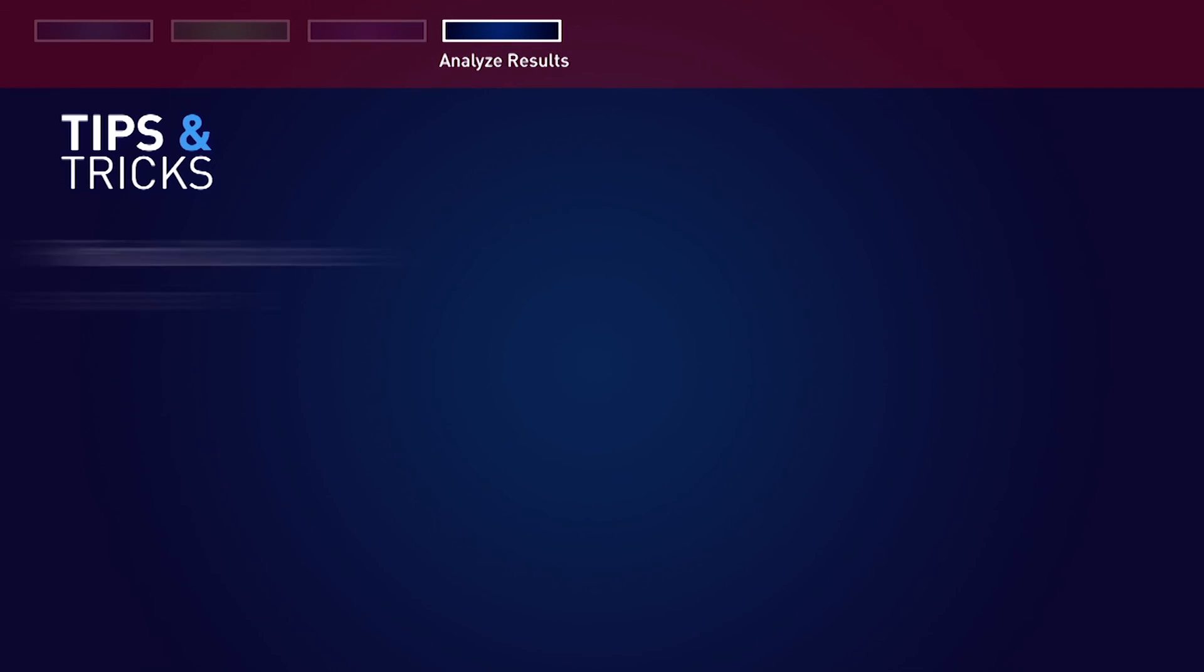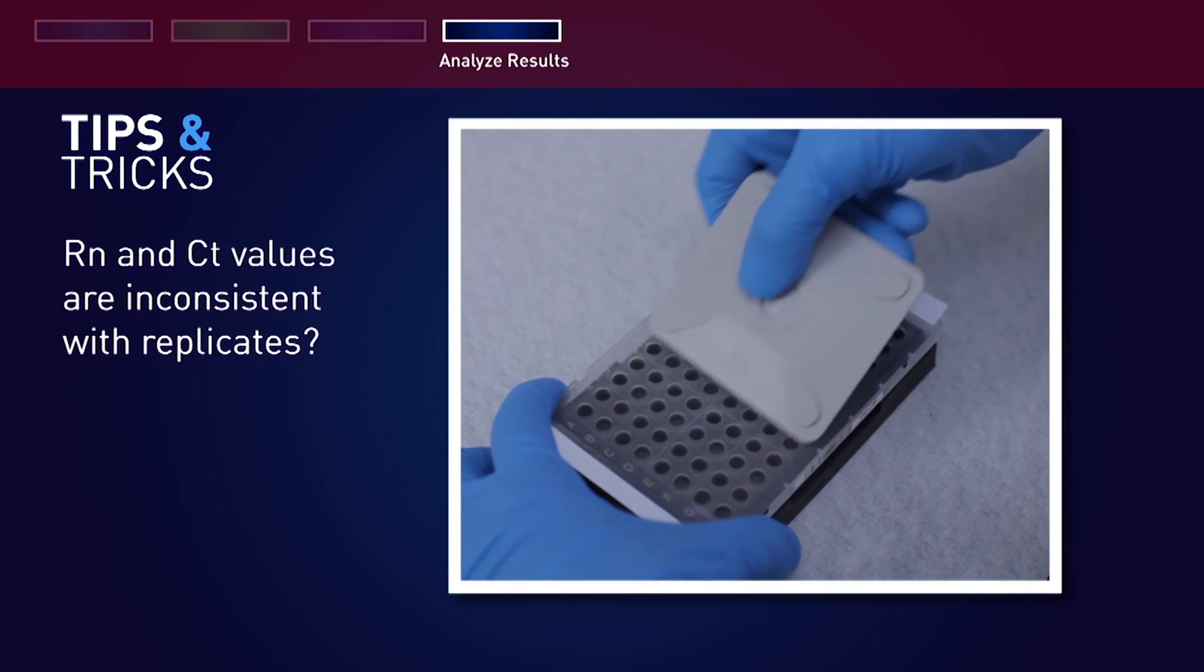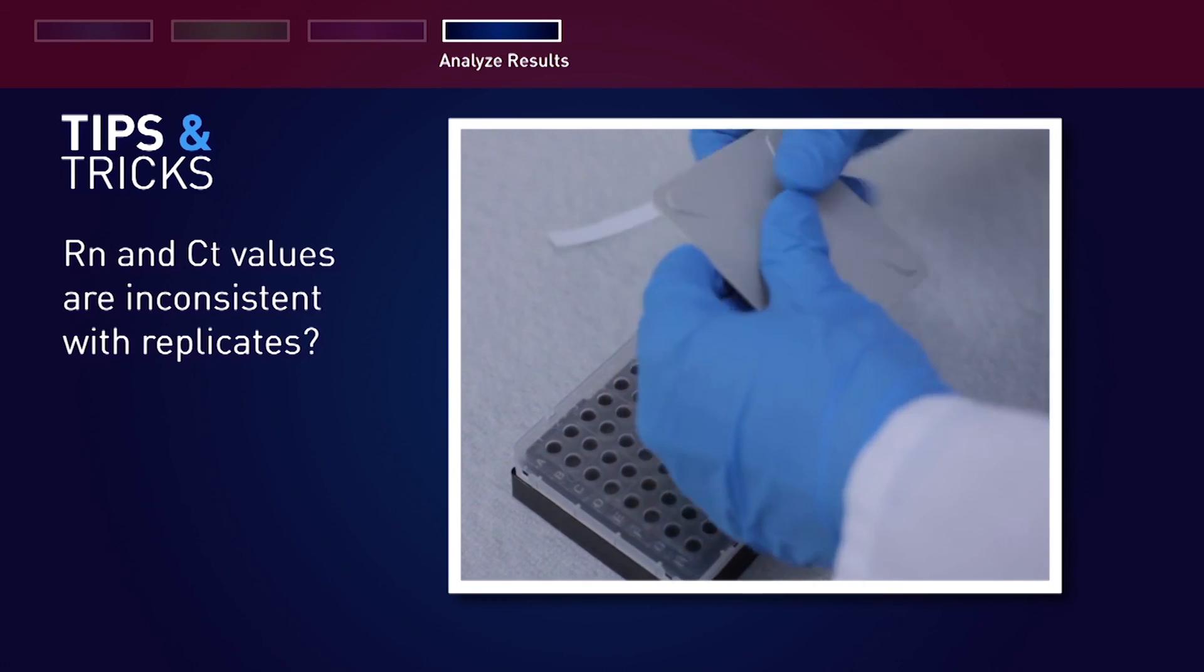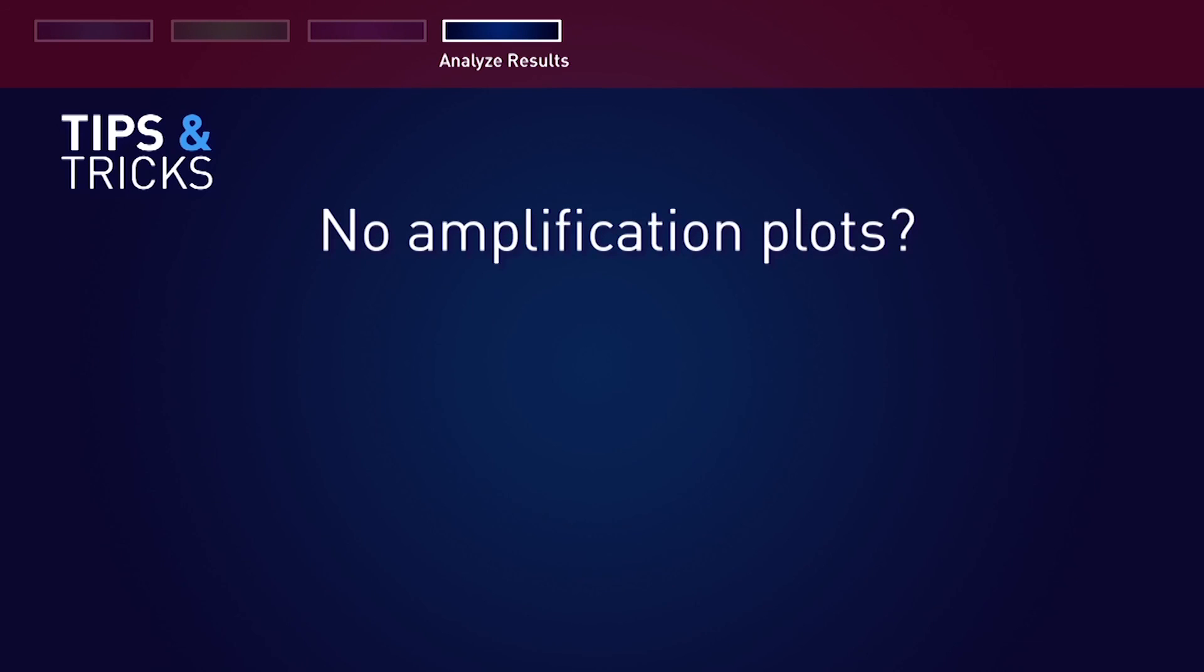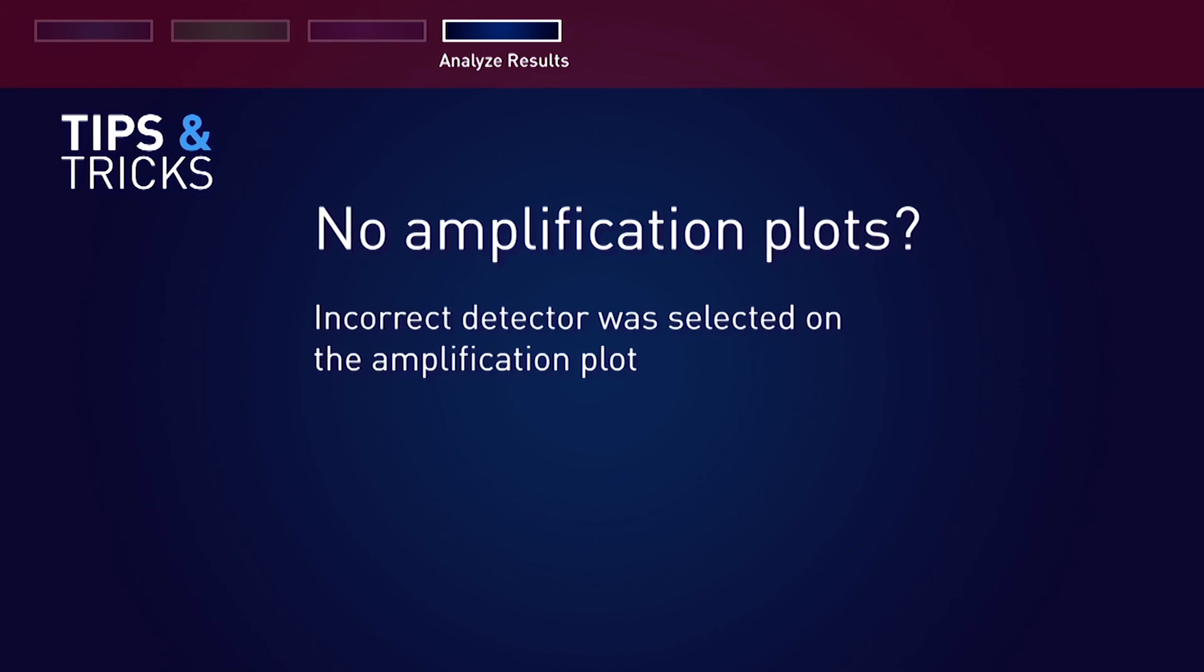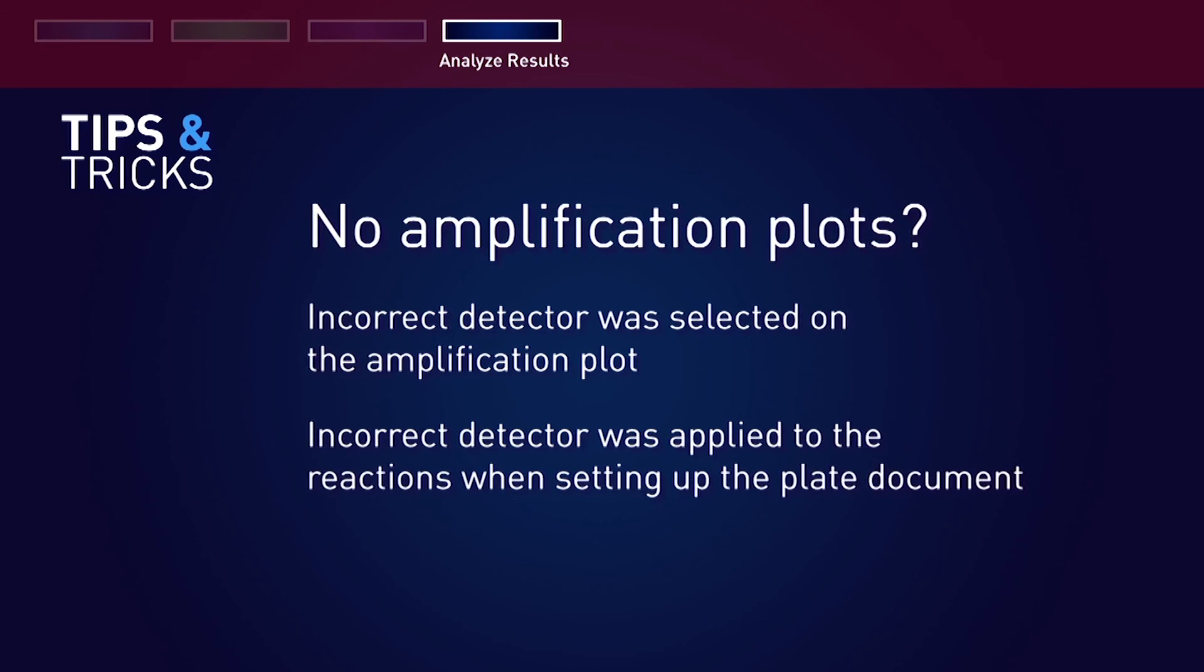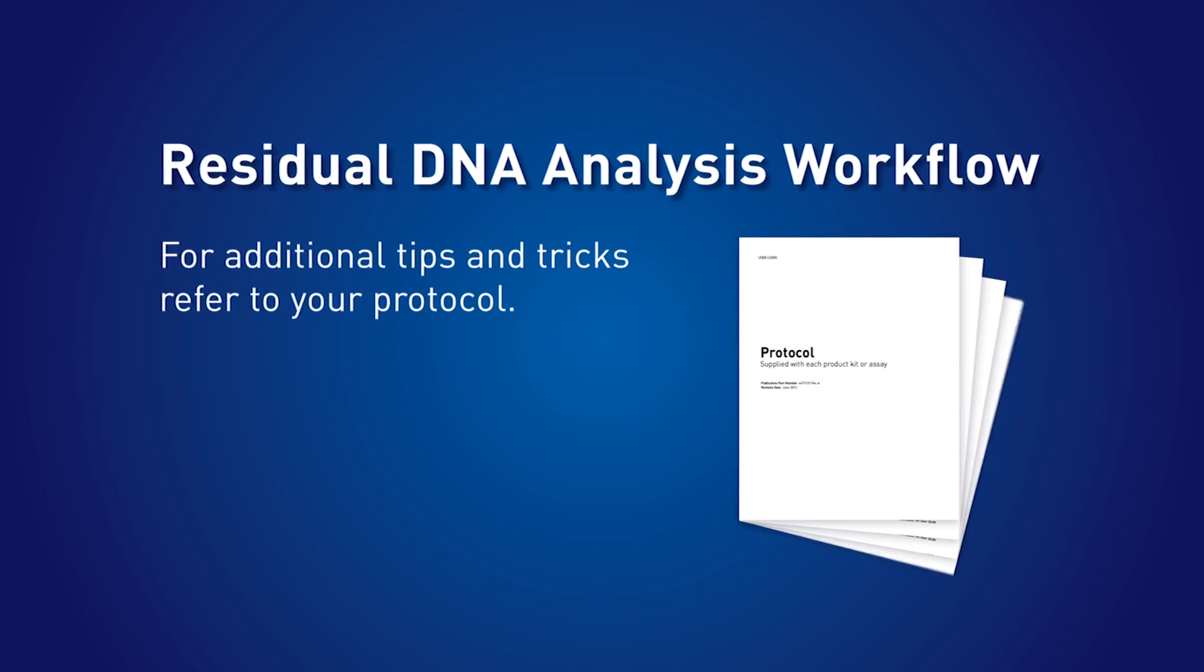If you find that the Rn and Ct values are inconsistent with replicates, it may be there has been evaporation of reaction mixture from some of the wells because the optical adhesive cover was not correctly sealed to the reaction plate. If you find there are no defined amplification plots, it may be because an incorrect detector was selected on the amplification plot or an incorrect detector was applied to the reactions when setting up the plate document. For additional tips and tricks, refer to your protocol.